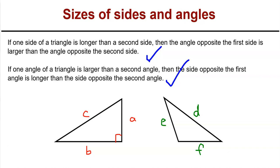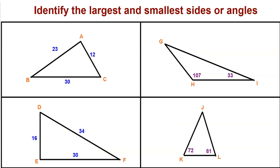Basically, the larger the angle, the larger the opposite side, and the larger the opposite side, the larger the angle. So in these four triangles, based on what we know, you're going to identify either the largest and smallest side or the largest and smallest angle based on the given information. If you're given the sides, find the largest and smallest angle. If you're given the angles, find the largest and smallest sides. Go ahead, pause the video, find what you need, and come back when you're ready to see the answers.